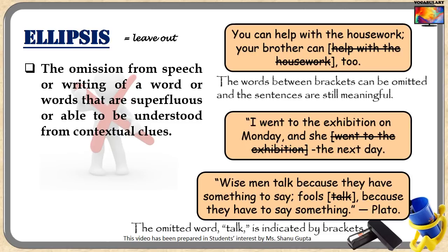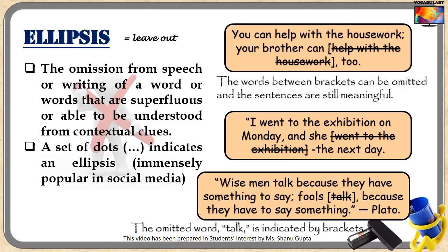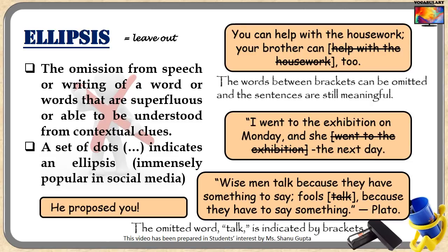There is an alternate definition of ellipsis that is important in literature: the word commonly refers to the use of three dots, which can be placed at the beginning, middle, or end of a sentence or clause. These three dots can stand in for whole sections of text that are omitted without changing the overall meaning. Nowadays this use of three dots is very popular in social media — for example, in a conversation between two girls where one inquires: 'He proposed you, and…' leaving the rest to the imagination.